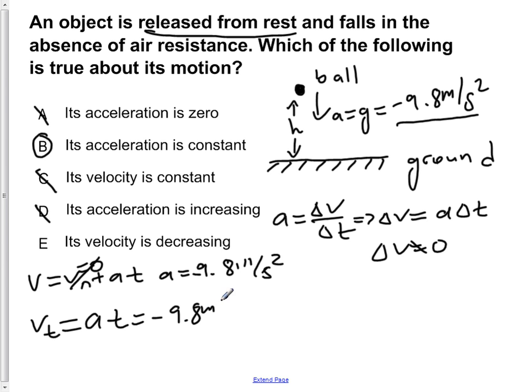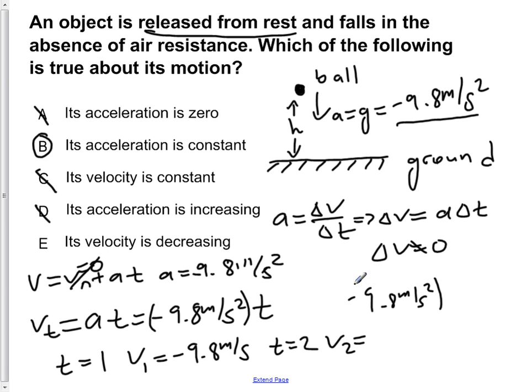We'll rewrite this now as a times t, which is negative 9.8 meters per second squared times time t. If t equals 1, our v at 1 is equal to negative 9.8 meters per second. If t equals 2, our velocity at 2 is twice the acceleration, is negative 9.8 meters per second squared times 2 seconds, which would give us negative 19.6 meters per second. So here you see that our velocity of our object is getting more negative, but the magnitude of it is not decreasing. It's actually increasing. It's getting larger.